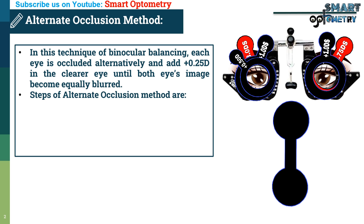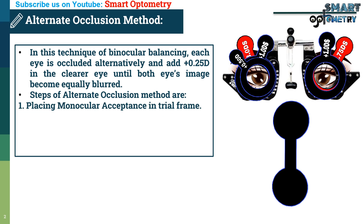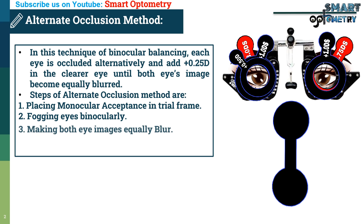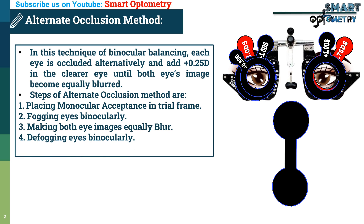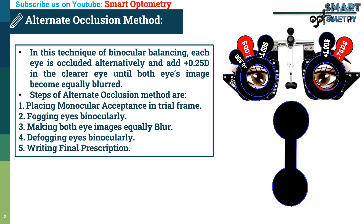The steps of the alternate occlusion method are: 1. Placing monocular acceptance in trial frame. 2. Fogging eyes binocularly. 3. Making both eye images equally blurred. 4. Defogging eyes binocularly. 5. Writing final prescription.